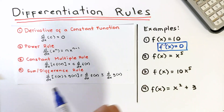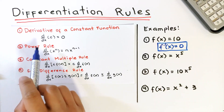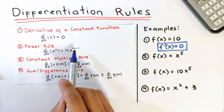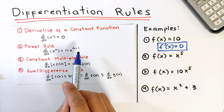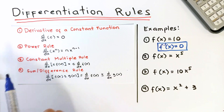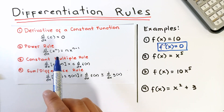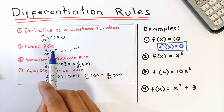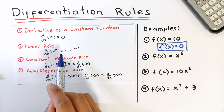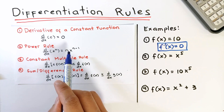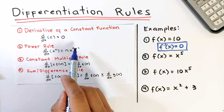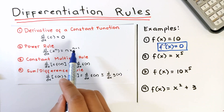Next, the power rule. For the power rule, we have: the derivative of x raised to n is equal to n times x raised to n minus 1. Here, x is the variable and n is the exponent. Essentially, we just need to bring the exponent down as a coefficient, giving us n, then copy the variable x and subtract 1 from the exponent, giving n minus 1.